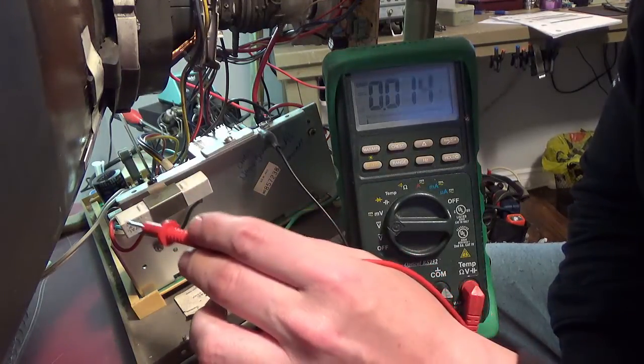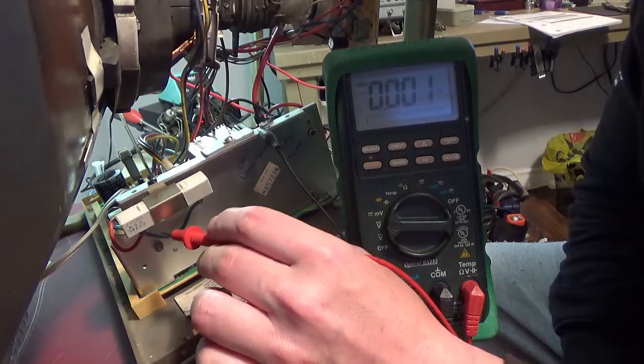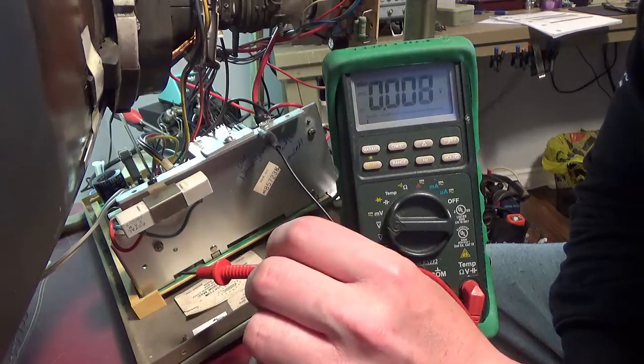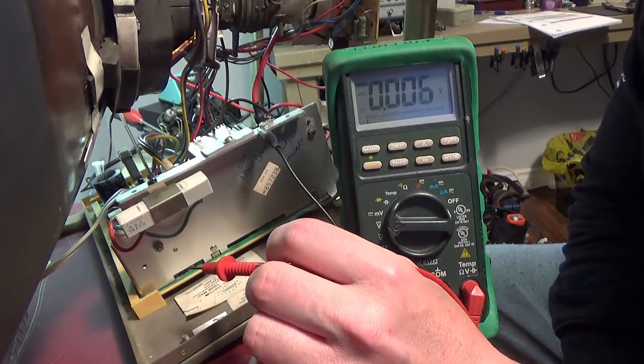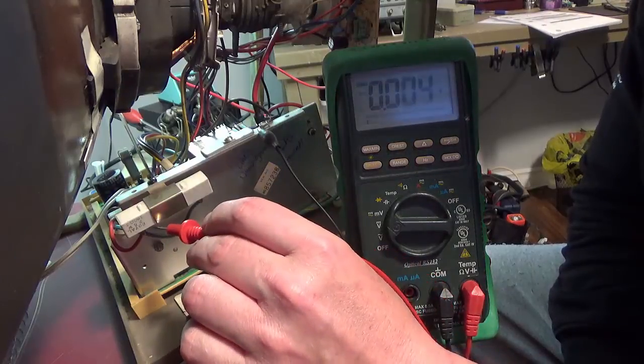The side that's closest to the CRT tube is the unregulated side, and we want to see somewhere around 160 volts DC. So here we go.